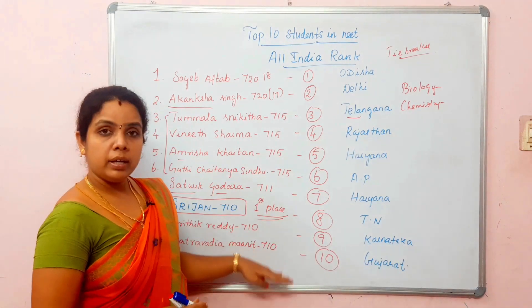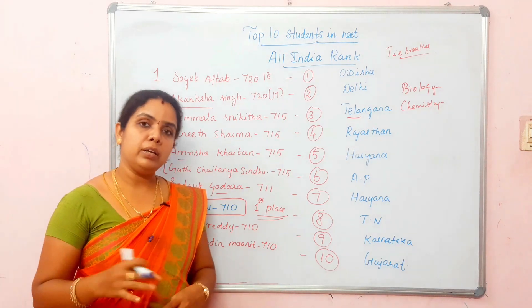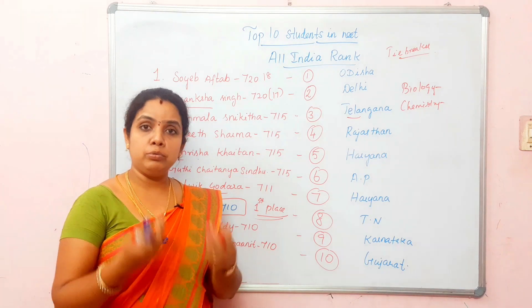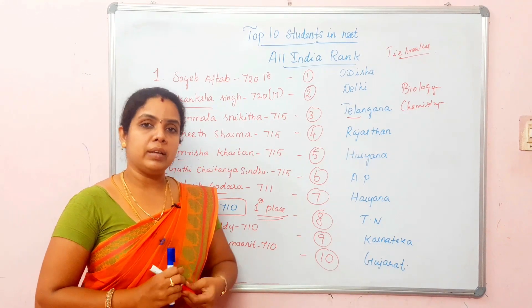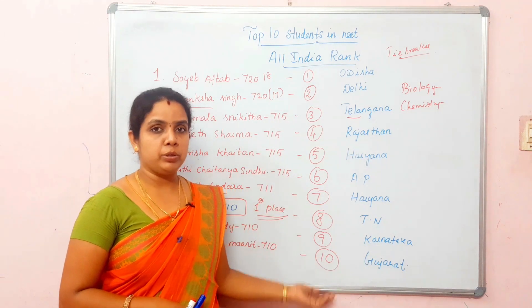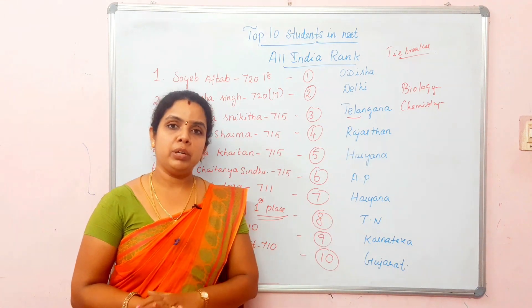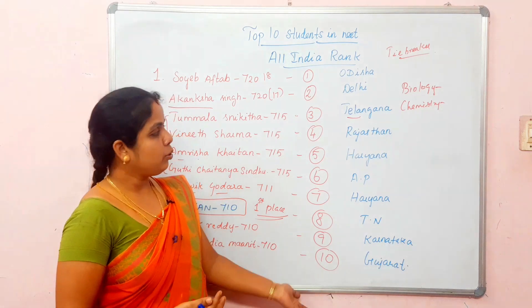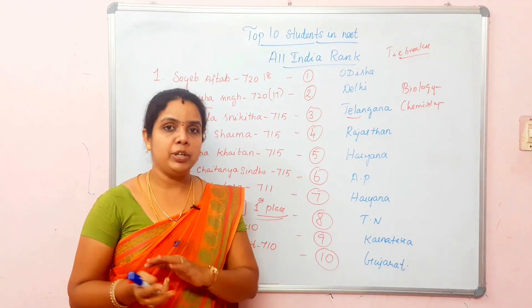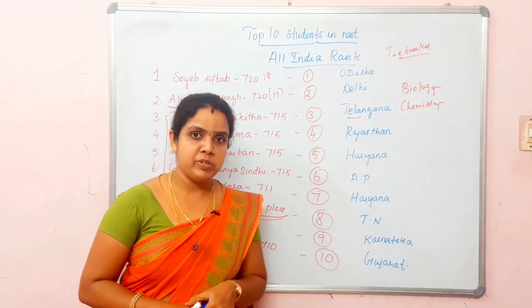If you look at the top 10 ranks, the 10th rank scored 700, the 650 rank scored around 1000, or around 2000 — the top 10 are an elite group. In the next video, we will see how many students performed like this. Stay connected with us and subscribe to our channel.